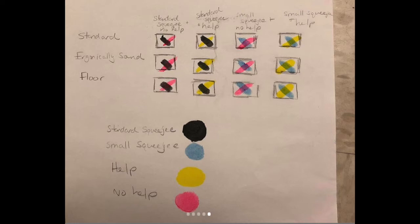I did prints with a standard squeegee, and with a standard squeegee I used the color black to create the print. For prints that I used a smaller squeegee for, I used the color blue. For prints that I received help with from the instructor, I used the color yellow to show that. And for prints that I used no help and did it completely by myself, I used the color magenta.